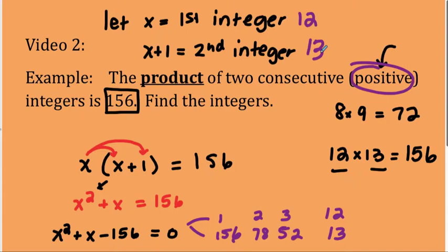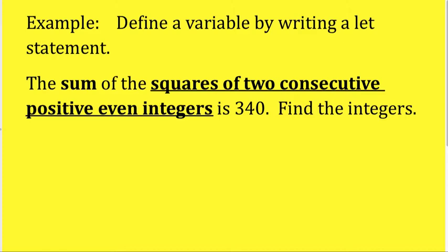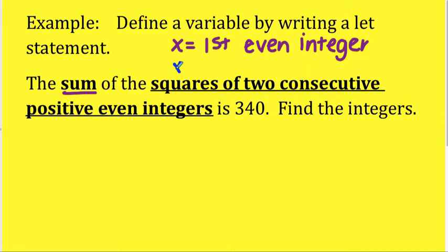Now I just am pointing out that sometimes it is smart to use algebra to solve a problem. Sometimes it might be easier to guess and check like we did. So using that framework will help you problem solve. All right, let's look at one more example. This one's a little bit harder. It says define a variable by writing a let statement. The sum of the squares of two consecutive positive even integers is 340. Find the integers. Okay, so we've got positive even integers. So I'm going to let x be my first even integer. And if it's the first one, then the next even integer would be 2 away from it, so x plus 2.